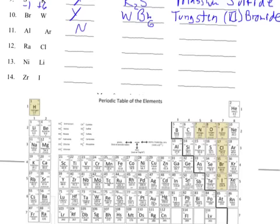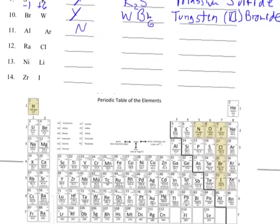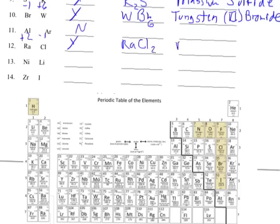Now we've got radium and chlorine. Radium is a plus 2 and it's a metal; chlorine is a minus 1. Yes, they can form a compound. I put the positive one — Ra — first and give it chlorine's number, 1, which is understood. Then chlorine gets radium's number, 2. The name is radium chloride — no Roman numeral needed since radium is always a plus 2. This works because two negative 1s is negative 2, and one positive 2 cancels that out.